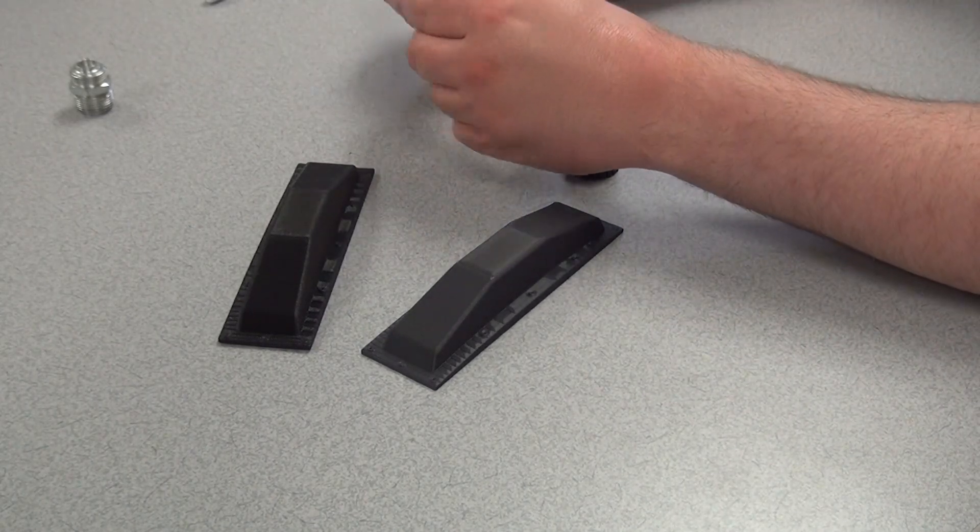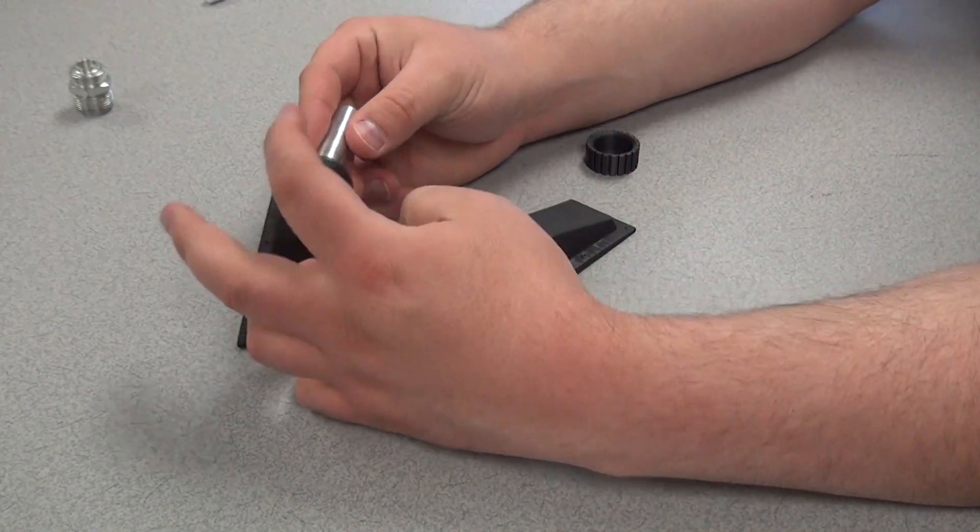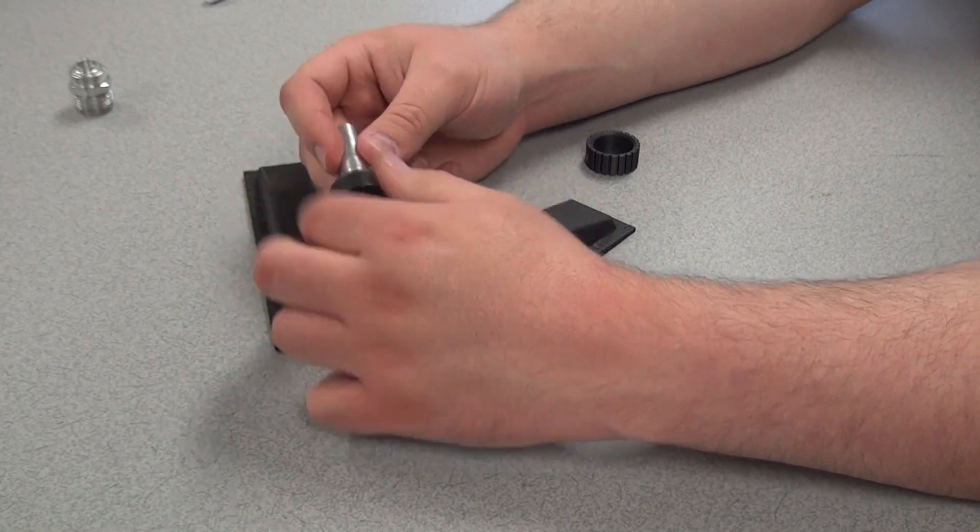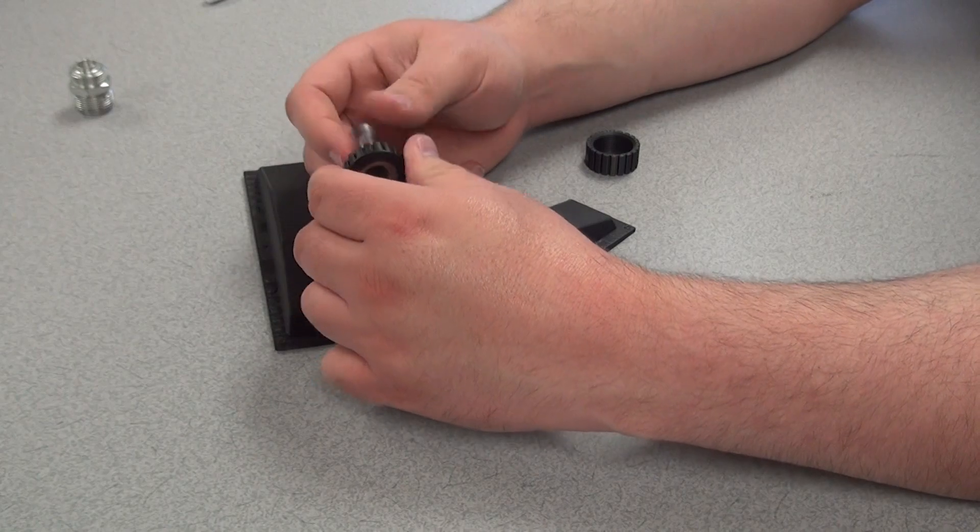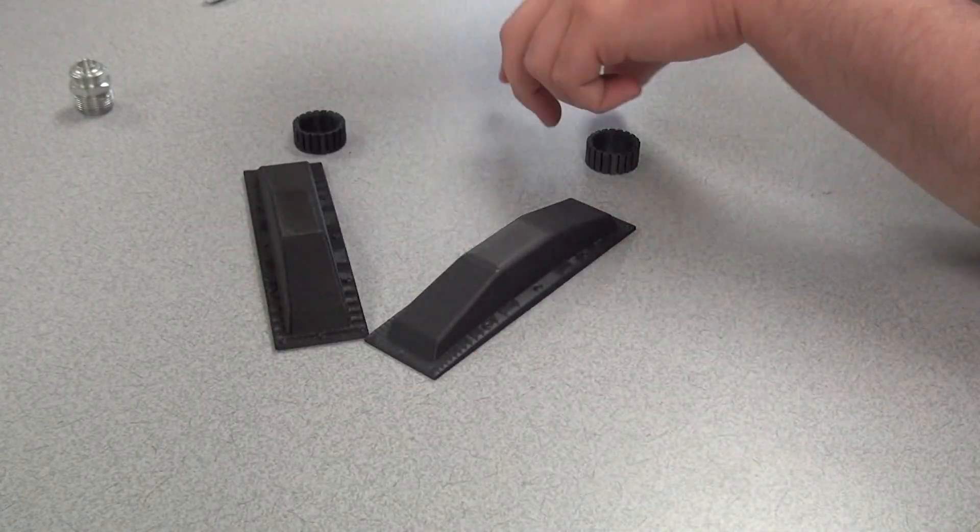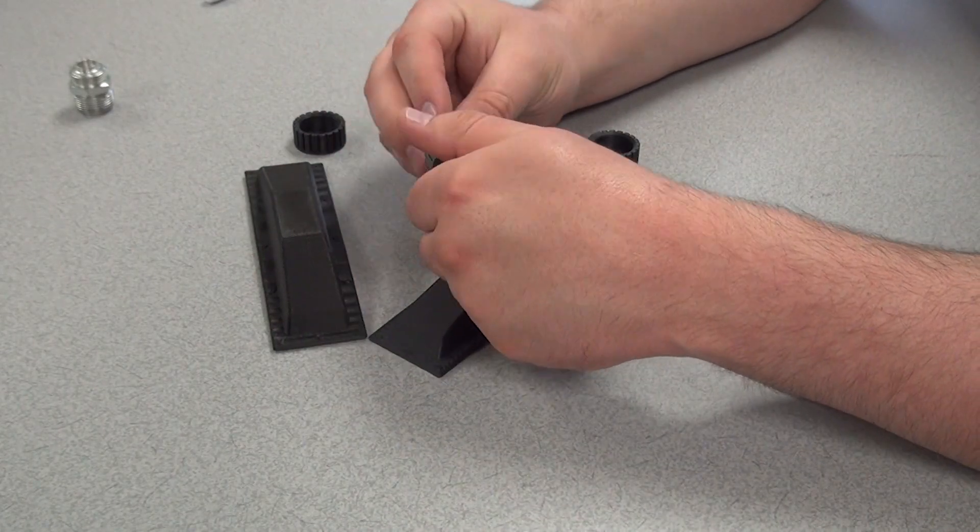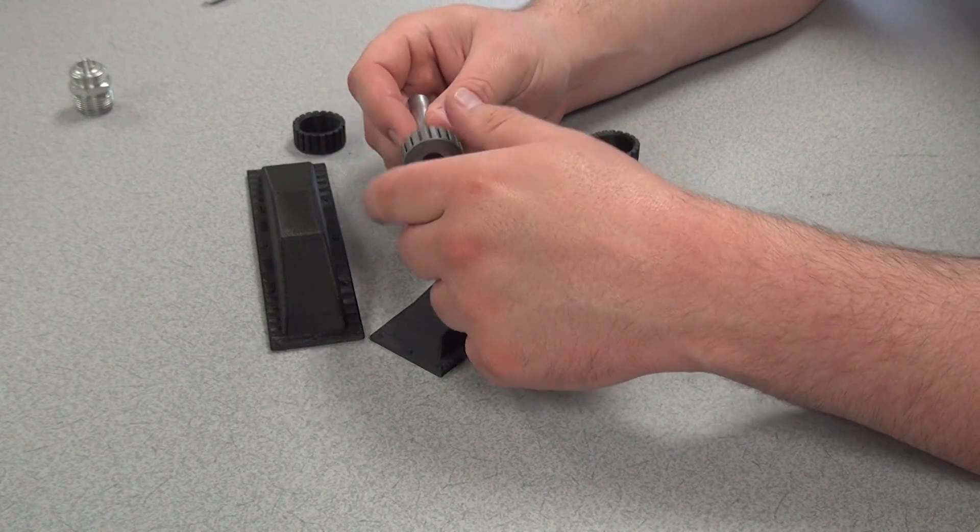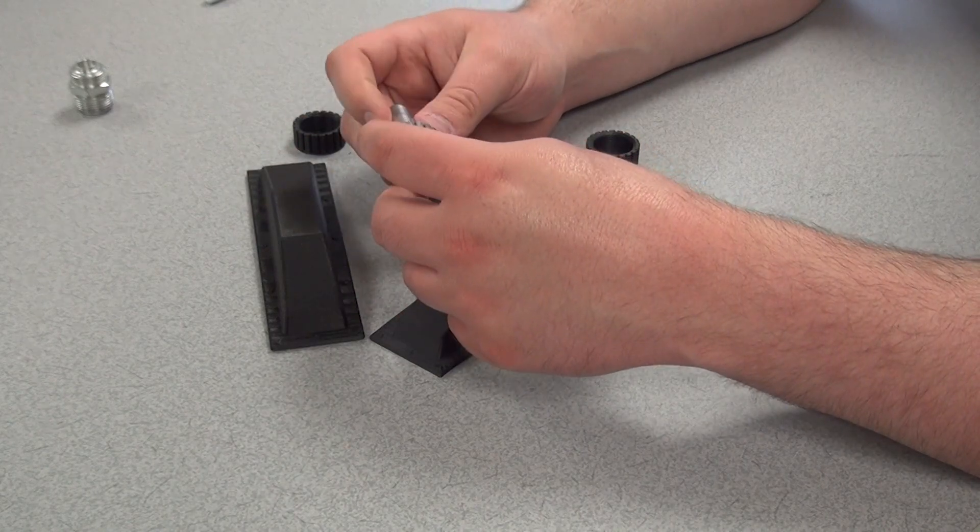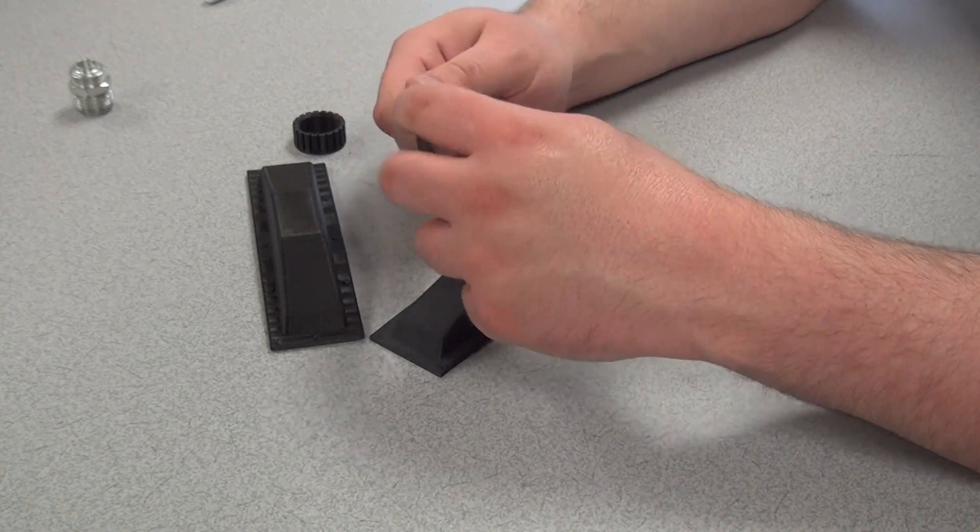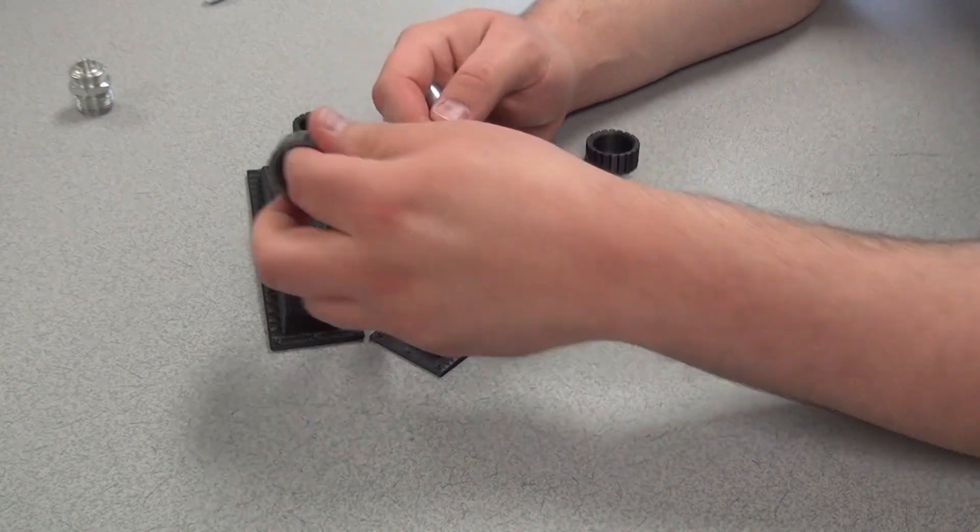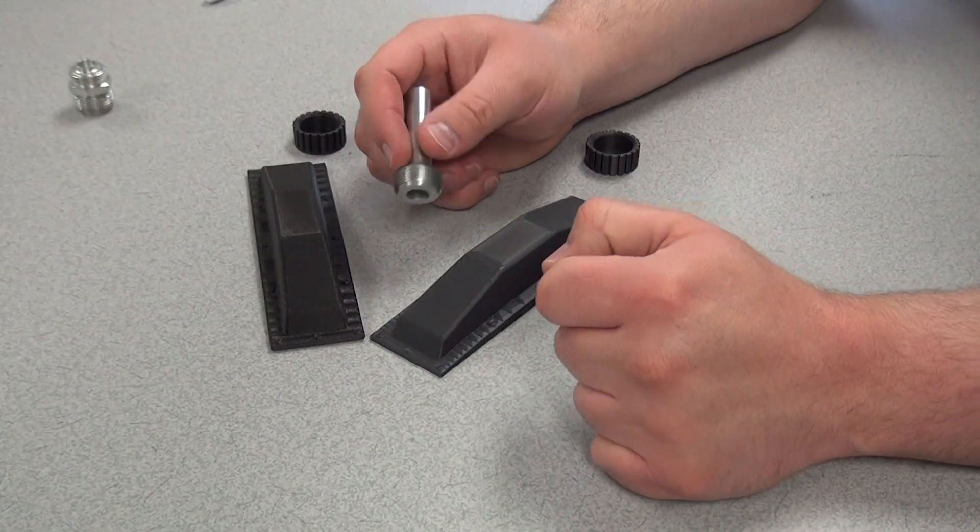Like with the Nylon X here, when I thread it on, it threads on nice and smooth, no problems at all. But when I use the Nylon G, it's got a little bit more of a grip to it, which is fine, there's nothing wrong with it. It's just it's got a little bit more grip than glide, so that's why I tend not to use it very much.